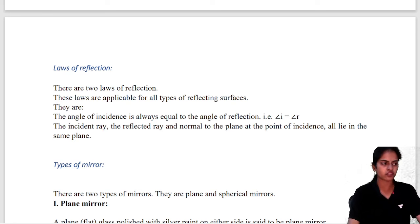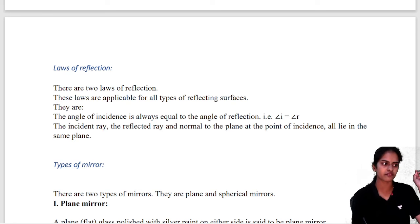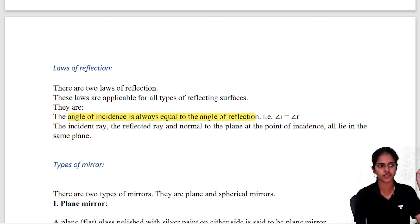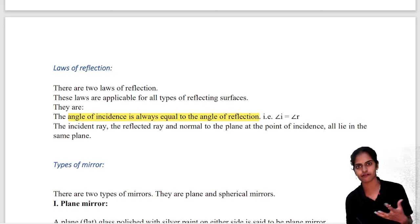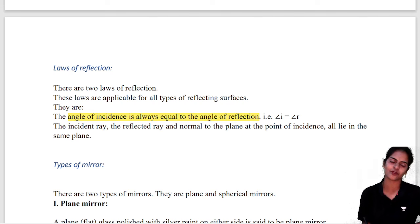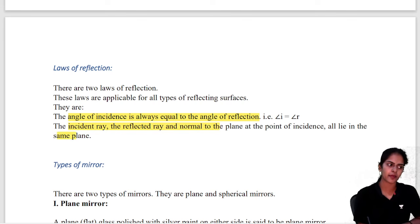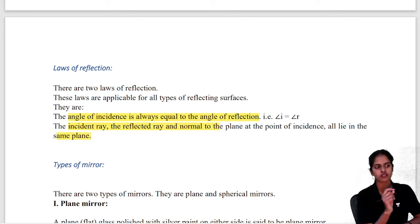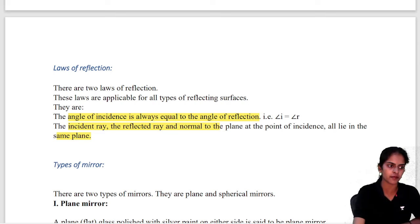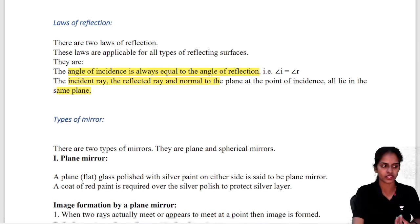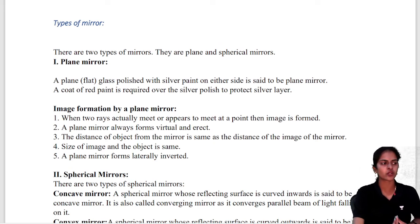There are two laws of reflection. First, angle of incidence is always equal to angle of reflection. Second, the incident ray, reflected ray, and normal all lie on the same plane. These are the two laws of reflection you have already learned.